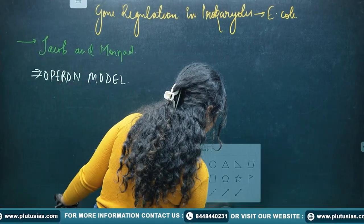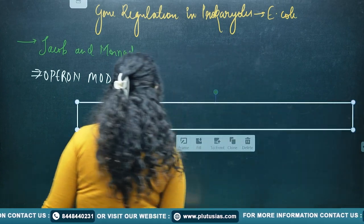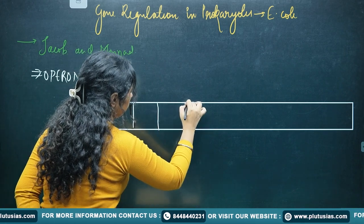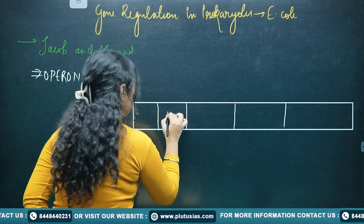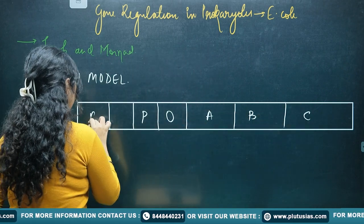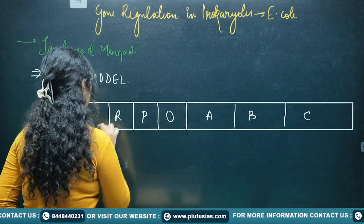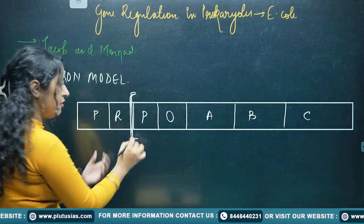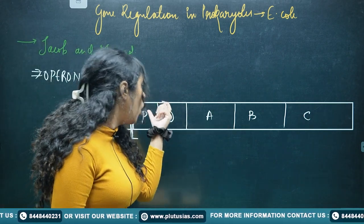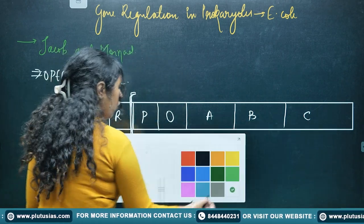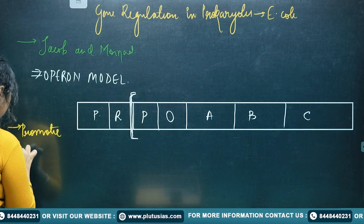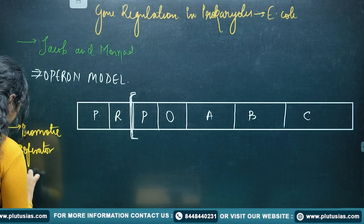Let's understand the operon model through a diagram. The main components of an operon system are: promoter, operator, and structural genes. These are the three components — promoter, operator, and structural genes.